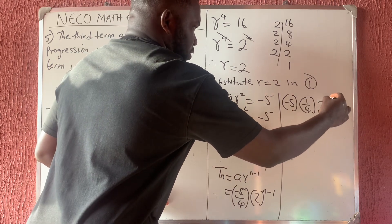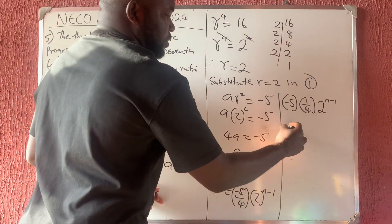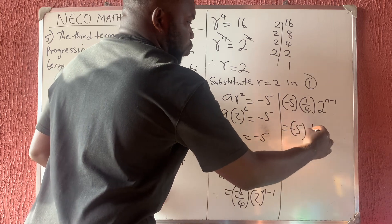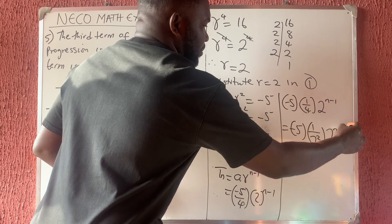Then 2 raised to the power of N minus 1. This time, this is giving us this. So this can be minus 5 in bracket of 1 over 2 raised to the power of 2, right? Then 2 raised to the power of N minus 1.